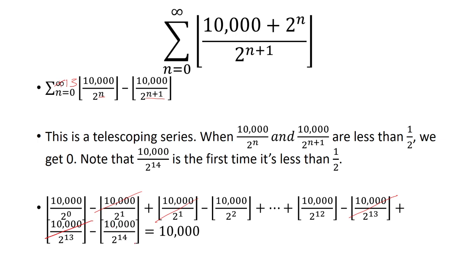Note that 10,000 over 2 to the 14th is the first time it's less than 1 half. And we already said that this is going to be 0. And the good thing is that this term and this term is going to cancel out.